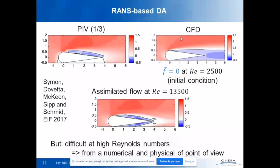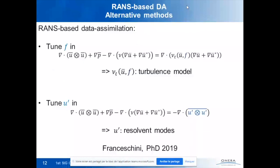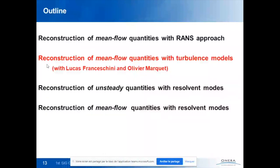Because of these difficulties at high Reynolds numbers, we moved to two new strategies investigated in the PhD of Lucas Francescini. The first uses a turbulence model, replacing the Reynolds stress term with a modeled version. The second uses resolvent modes to represent u-prime. I'll now cover the turbulence model approach.